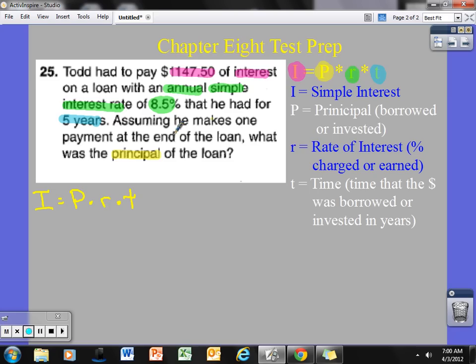So, if I take a look, he had to pay $1,147.50 of simple interest. So, that is my I. I am just going to substitute. Now, that is going to be equal to, I don't know the P because I am trying to find the principal. So, the P is the unknown in this. I am going to times that by, now what I am going to do is convert that rate to a decimal right now. So, 8.5% as a decimal, move the decimal place two places to the left, one, two. So that really becomes .085. And he borrowed this money for a time period of five years.